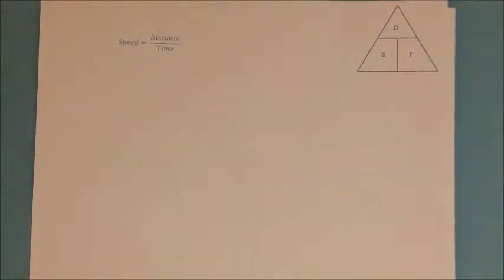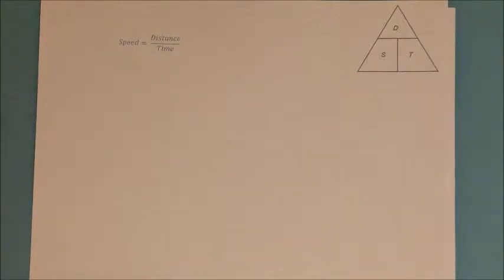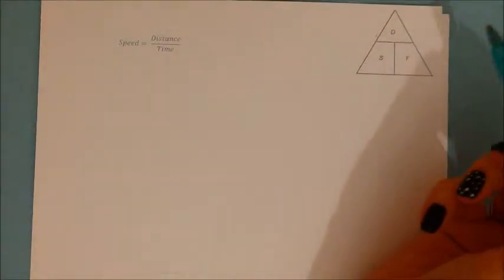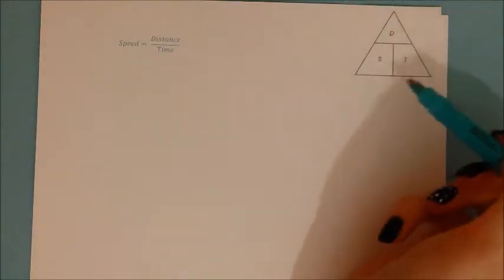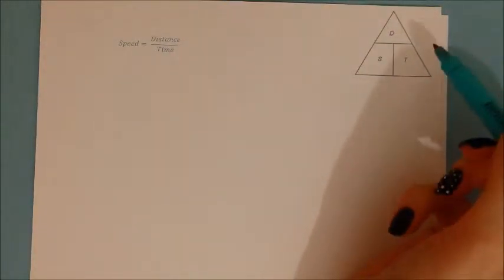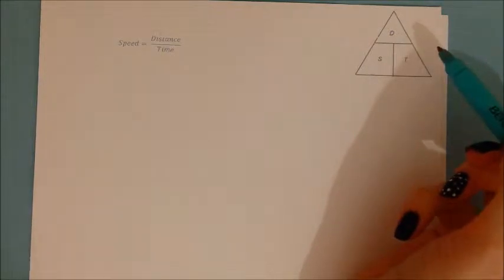One of the most common formulas you'll want to rearrange, especially in science, is formulas for compound measures. The two most common ones I'm going to look at: the first is to do with speed, distance, and time. It's okay to use these triangles as long as you explain to the children why this works — it only works because these three variables have a very special relationship.